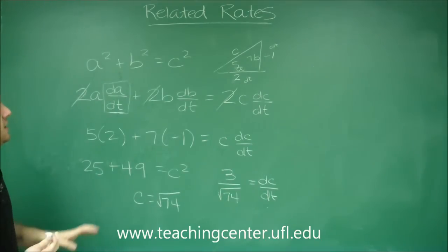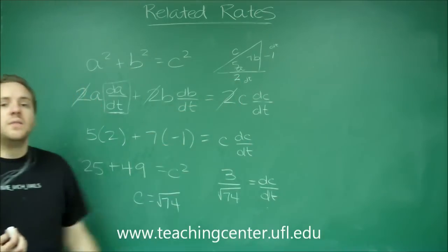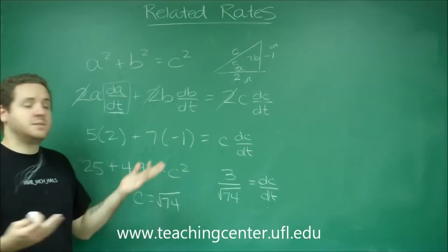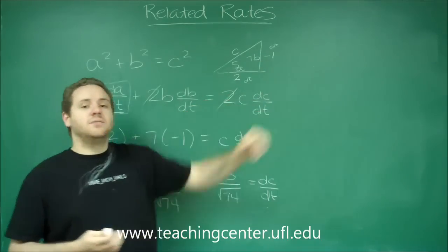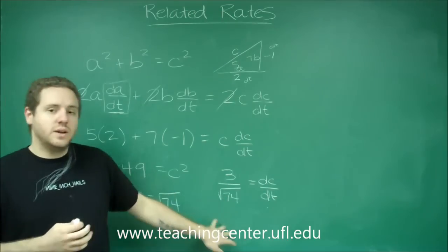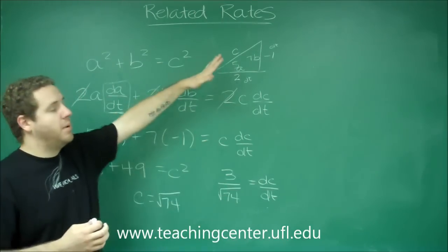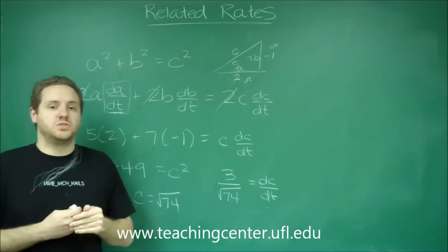I want to point out that when you have something like this, this DA DT I said was 2, that means A is growing at a rate of 2 units per whatever time unit. B being negative means it's shrinking. So it's important to note that the answer I got here was positive meaning that your hypotenuse would be growing, but it's very possible that it could have been negative and that would mean that it would have been shrinking.